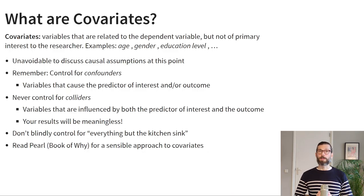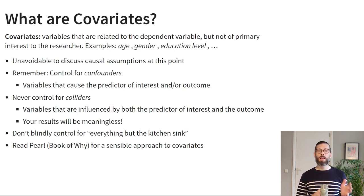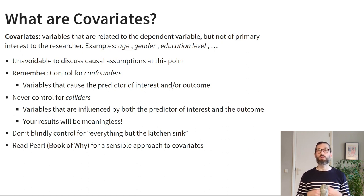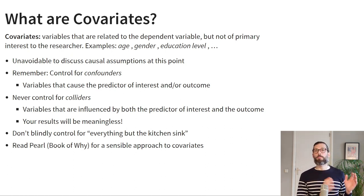So what are covariates or control variables? Covariates are variables that are related to the dependent variable but they are not of primary interest to the researcher. Very often people consider age, sex, education level, and similar variables to be control variables but not of primary theoretical interest.